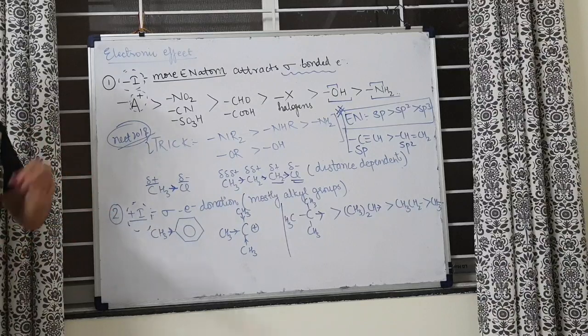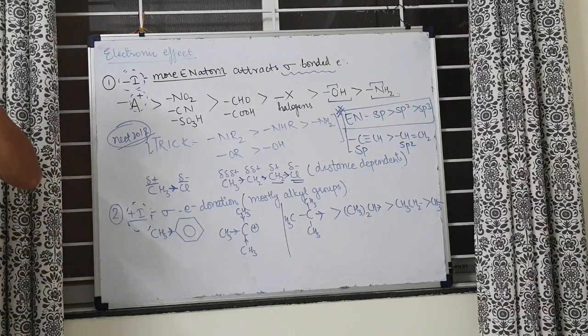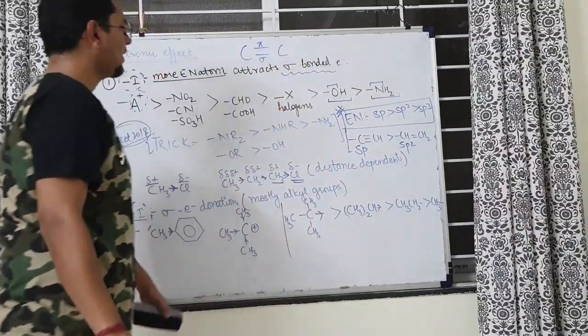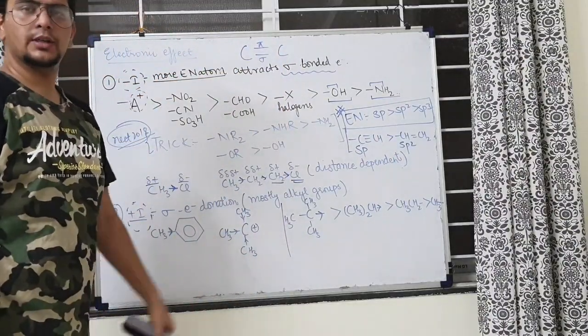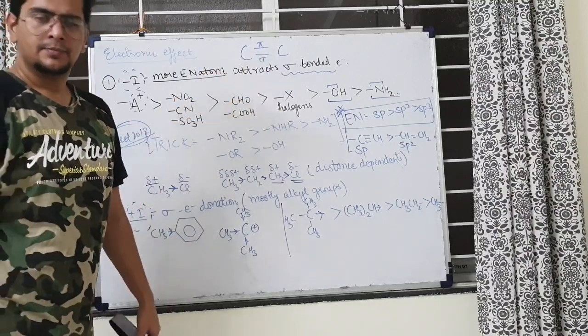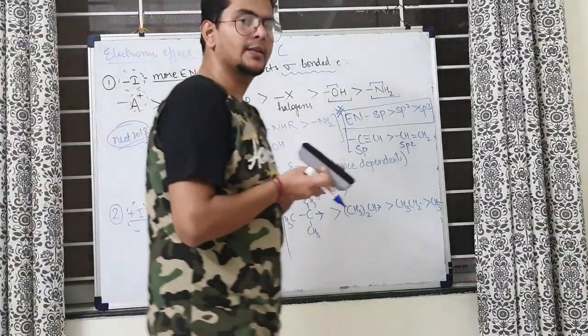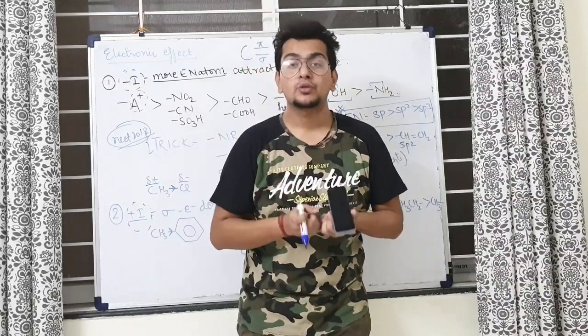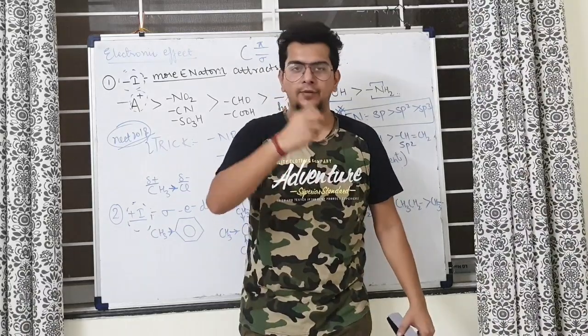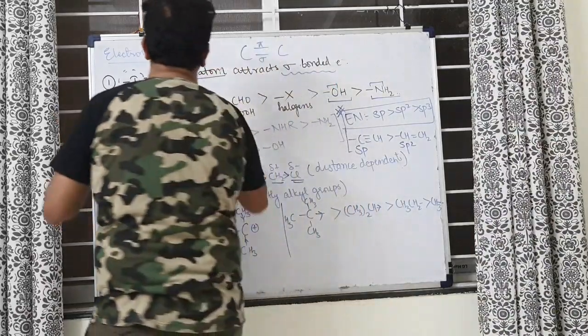Now, what is inductive effect? First, understand that inductive effect, +I and -I, both are sigma effects. There's a sigma bond and a pi bond. When sigma electrons shift toward one atom, that's called sigma effect. When pi electrons shift, it's called pi effect. What is -I? If I'm a -I group, that means I'm more electronegative.